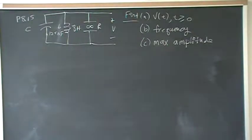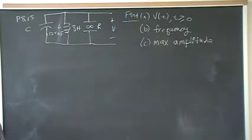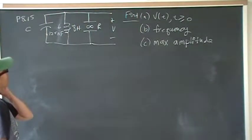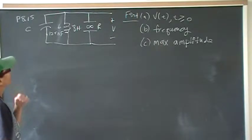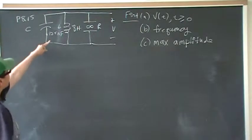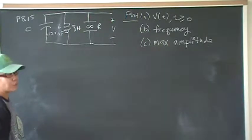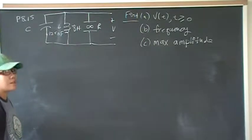Hi everybody, this is problem 15 from chapter 8. In this problem we're looking at a parallel RLC circuit and the capacitor is 125 nanofarads, the inductor is 8 Henrys, and they took out the resistor so the resistance is infinity.